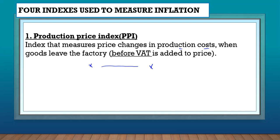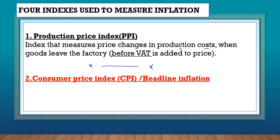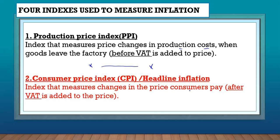Once production costs are added, goods are sold to consumers. The Consumer Price Index, the CPI — sometimes called headline inflation — measures changes in the price that consumers pay. How much am I paying for a particular good this year versus next year? That's the consumer price index. So the difference is: PPI uses changes in production costs, while CPI uses the price consumers pay to measure inflation.